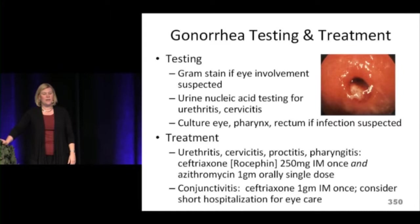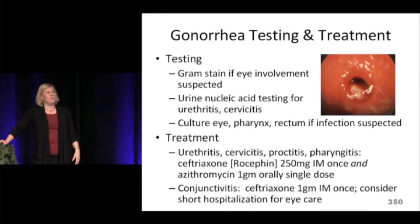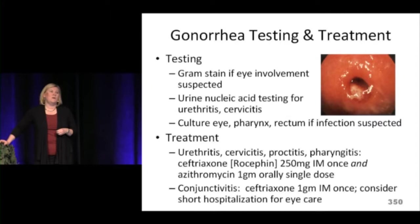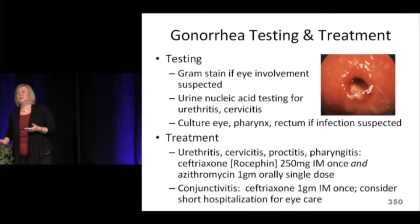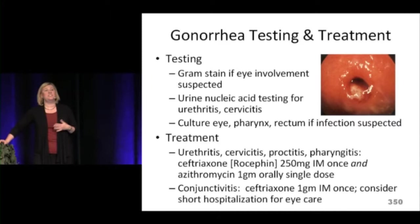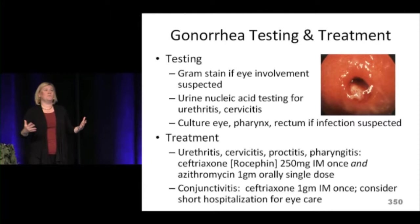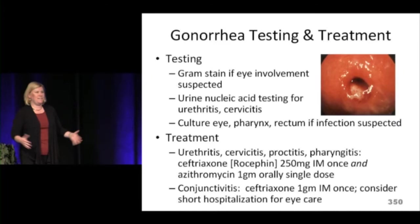Treatment recommendations for gonococcus have changed recently. You treat with ceftriaxone (Rocephin) 250 mg IM plus azithromycin. We used to add azithromycin just to cover chlamydia, but gonorrhea is showing resistance to quinolones and there are case reports of resistance to cefixime, an oral cephalosporin. So the recommendation now adds azithromycin 1 gram to ceftriaxone to cover possible resistant species. The CDC admits there haven't been actual cephalosporin treatment failures in the US, but added the recommendation as a precaution.